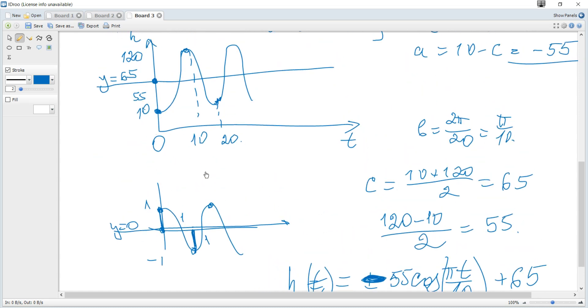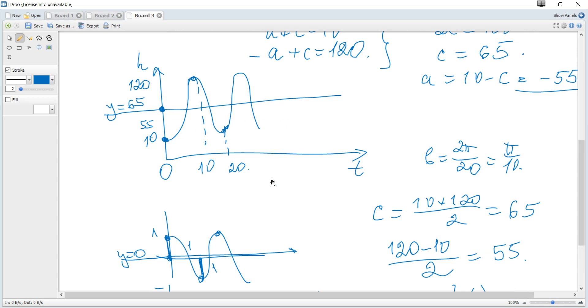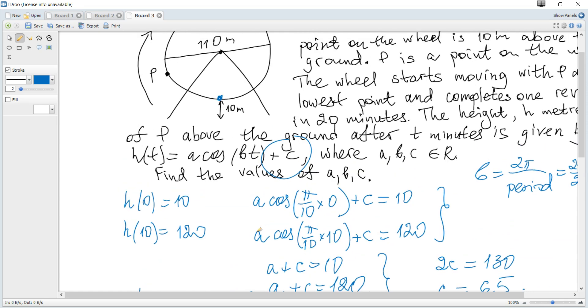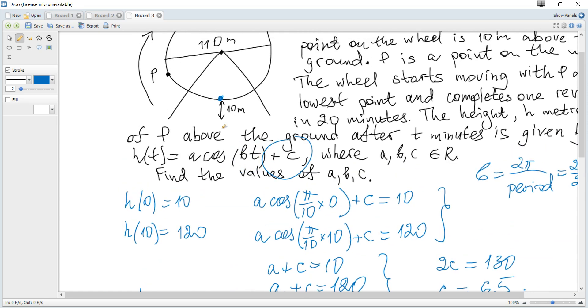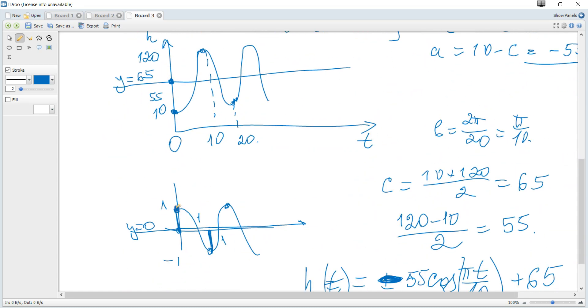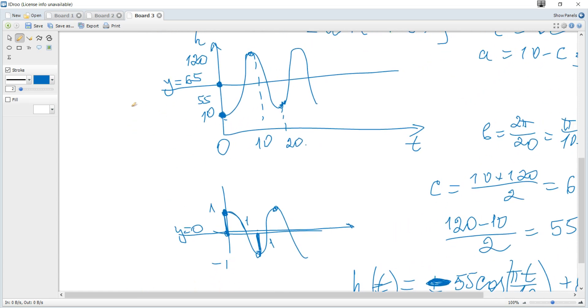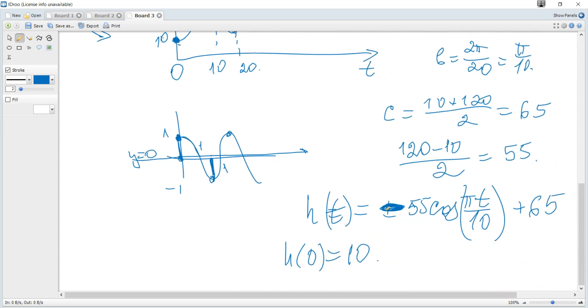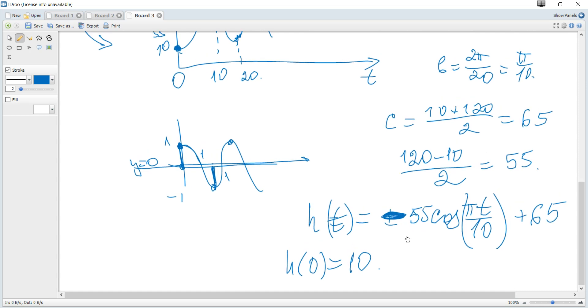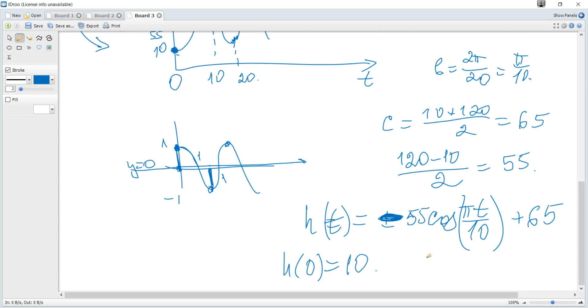Alternatively, notice that since there's no horizontal shift (no plus or minus within the argument), usual cosine starts at its maximum when t = 0. Here, at t = 0, we have the minimum point, meaning the cosine is reflected about y = 65. So it's negative cosine, hence A = -55. That's all for this question.